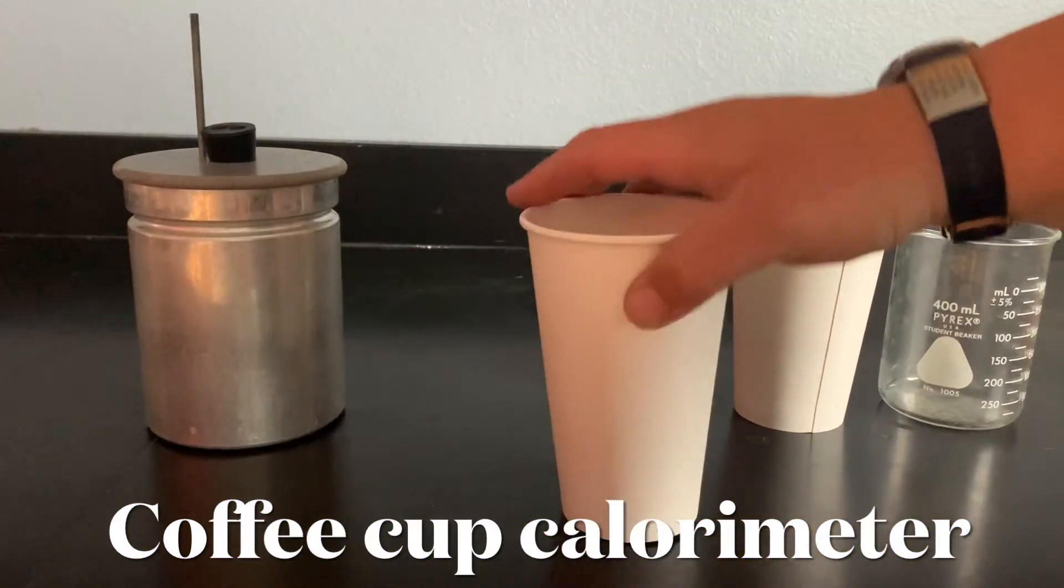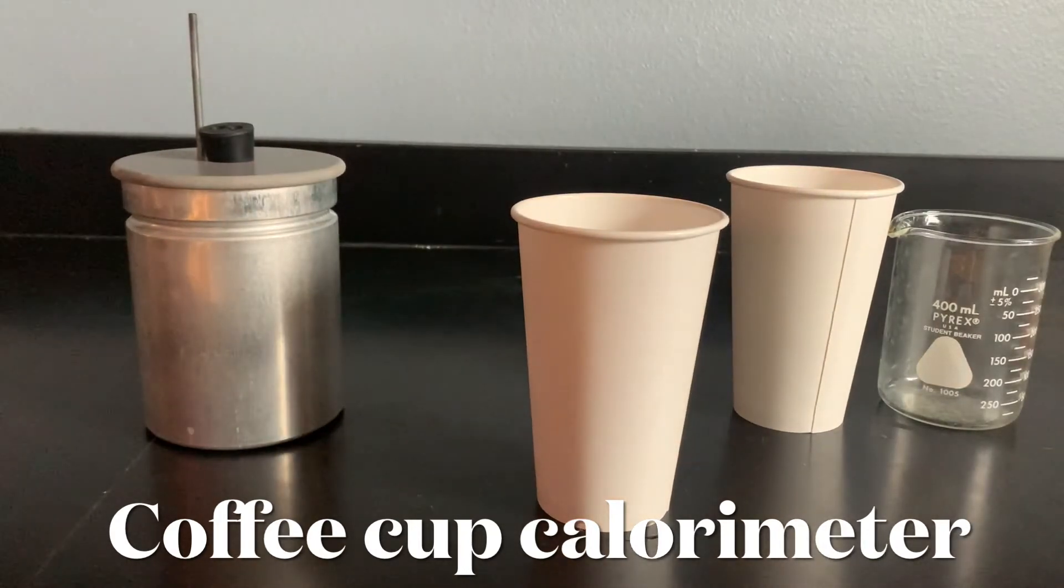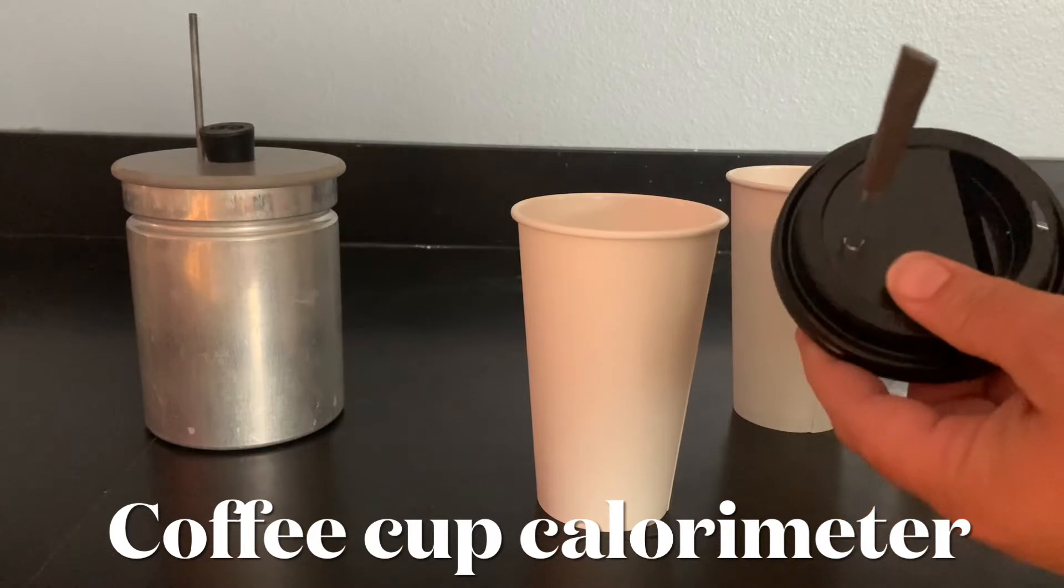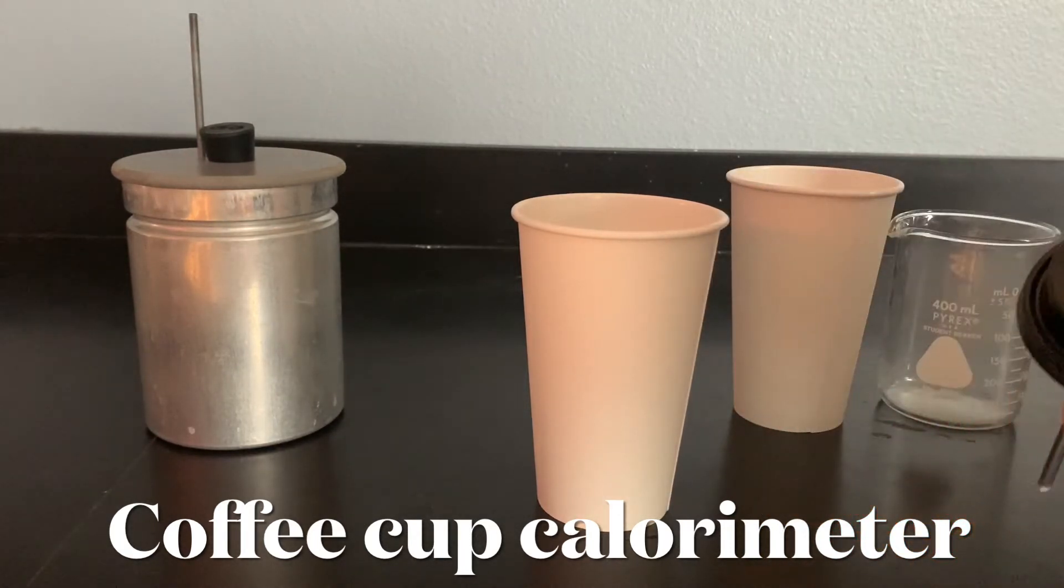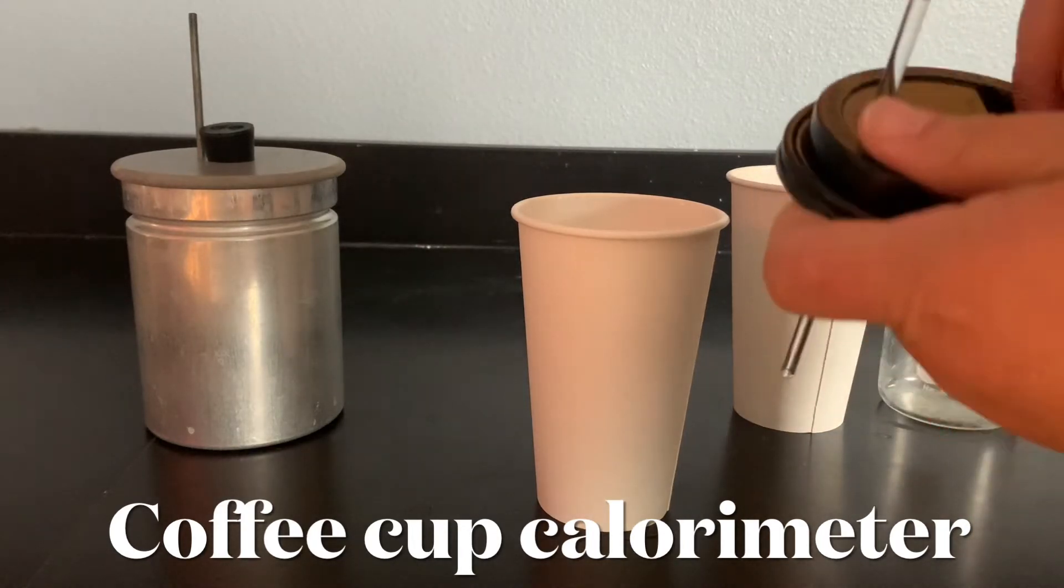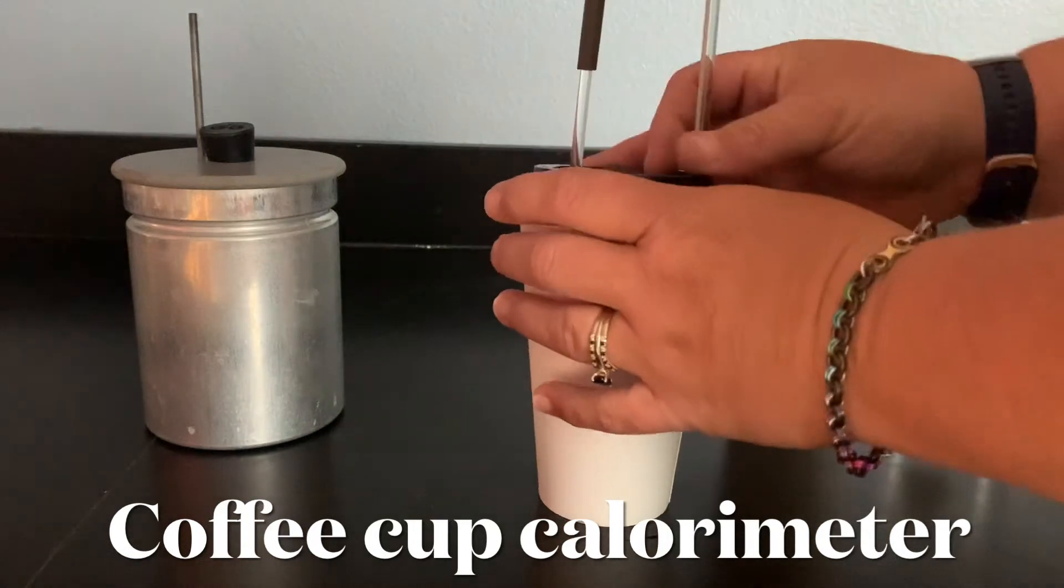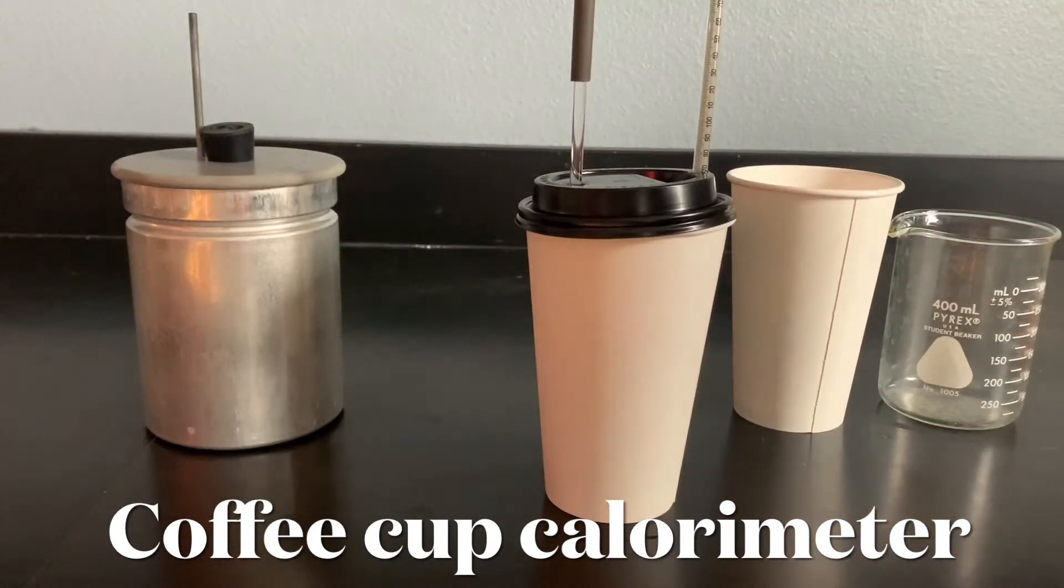Our second type that we'll be using is a coffee cup and it's a great calorimeter as well. We're going to have this slot here in the lid for the temperature probe, or if I want to I can also use a thermometer with it. I can stick a thermometer in there, and then I have a stirring rod. So there I have my setup.